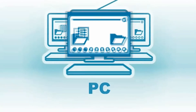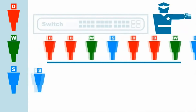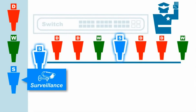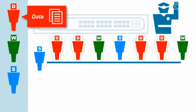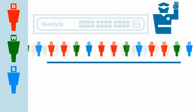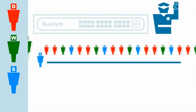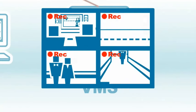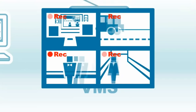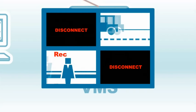Your switch must handle multiple kinds of traffic — like your surveillance traffic, web surfing, and data transfers. During periods of heavy network traffic, delivery of your surveillance traffic may be delayed. This can cause your surveillance video to freeze, skip frames, or even drop out completely.